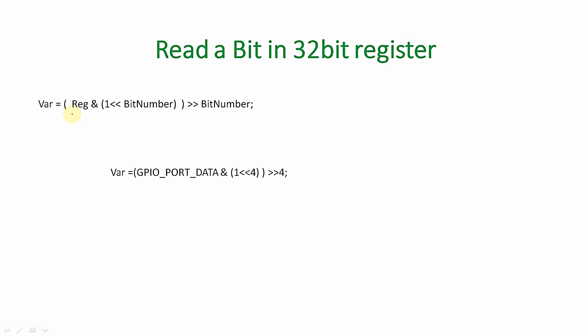Let's take an example. We are reading bit number 4 of the register 'GPIOPORTDATA'. We want to find the status of bit number 4 — whether it is 0 or 1. We will mask and find the bit number 4 status and load the result into 'var'. If 'var' has the value 1 at the end, bit number 4 of GPIOPORTDATA is 1 (high). If 'var' is 0, then bit number 4 of GPIOPORTDATA is 0 (low).